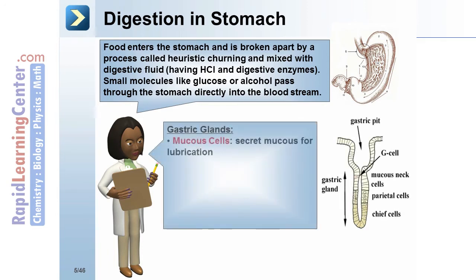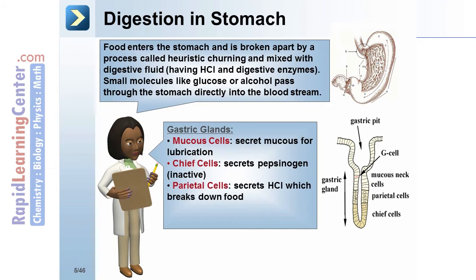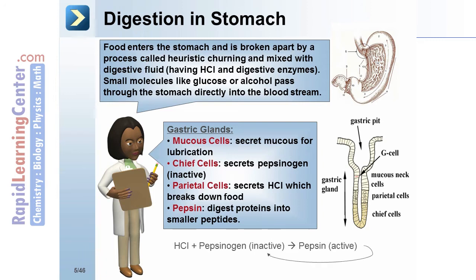Gastric glands: mucus cells secrete mucus for lubrication. Chief cells secrete pepsinogen, which is inactive. Parietal cells secrete HCL, which breaks down food. Pepsin digests proteins into smaller peptides. HCL plus pepsinogen — which is inactive — leads to an active pepsin.